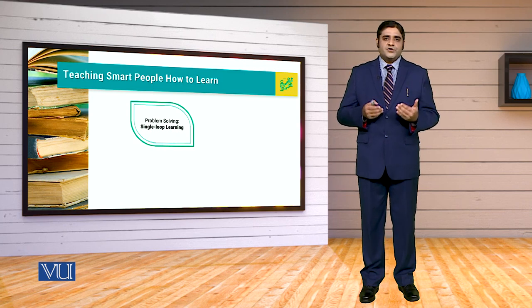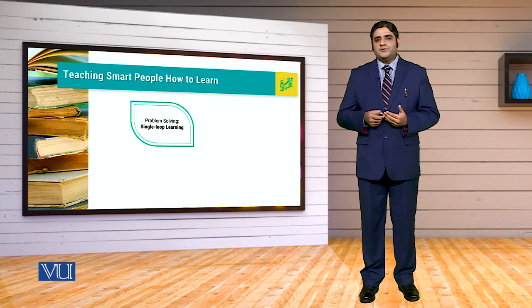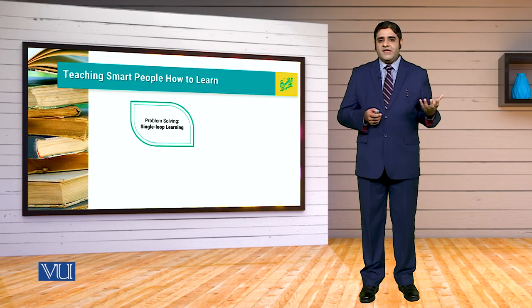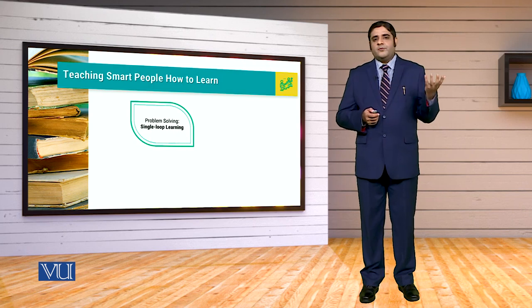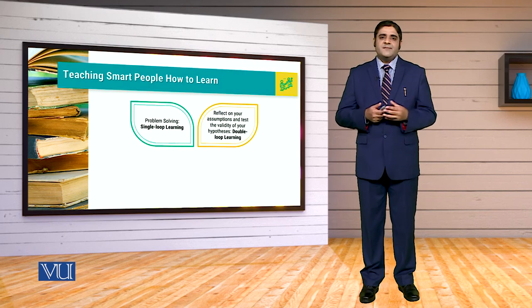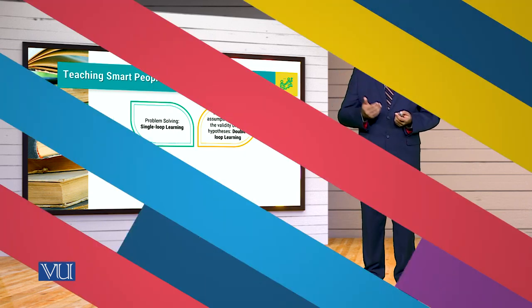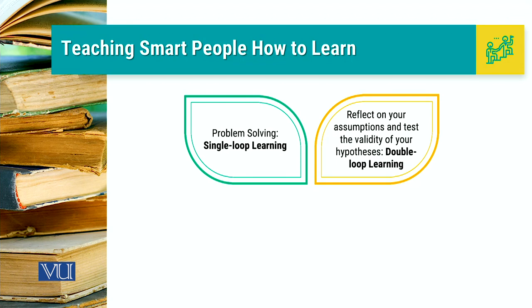When we talk about teaching smart people how to learn, remember that people can create capability and it can be a single loop learning perspective. At the same time, they can create a capability where they can challenge the assumptions. We can challenge the assumptions to solve the problems, which we can do through double loop learning also.